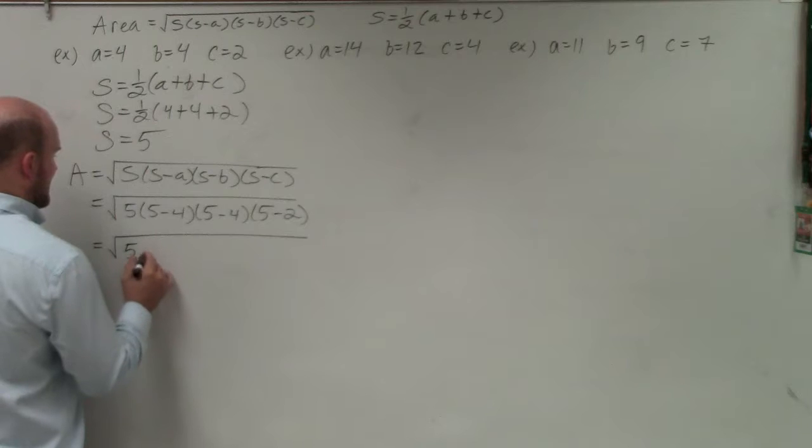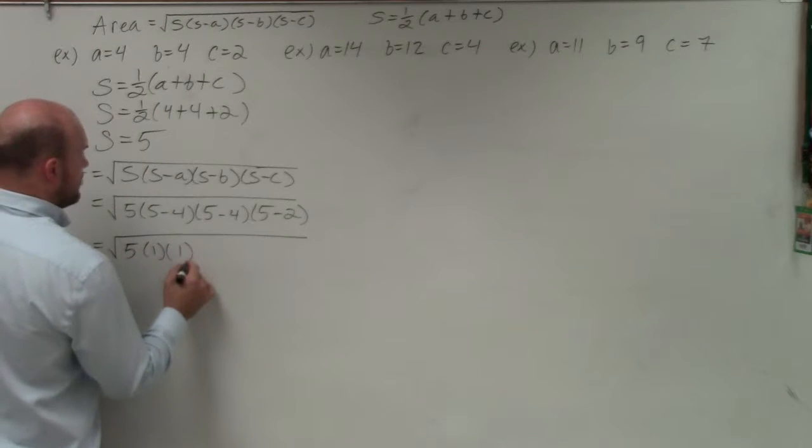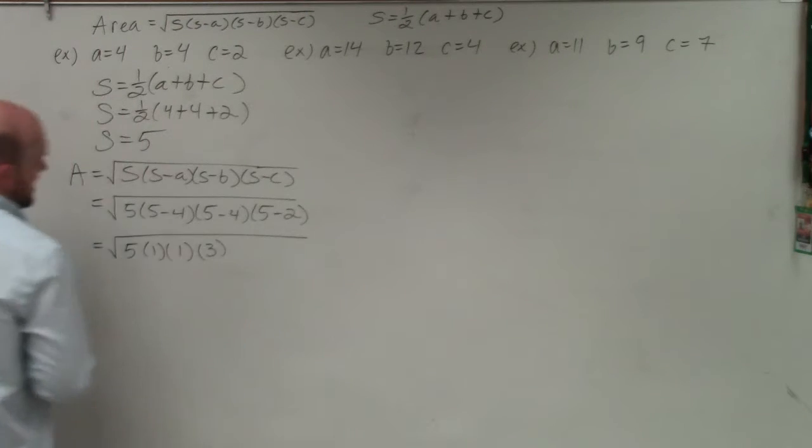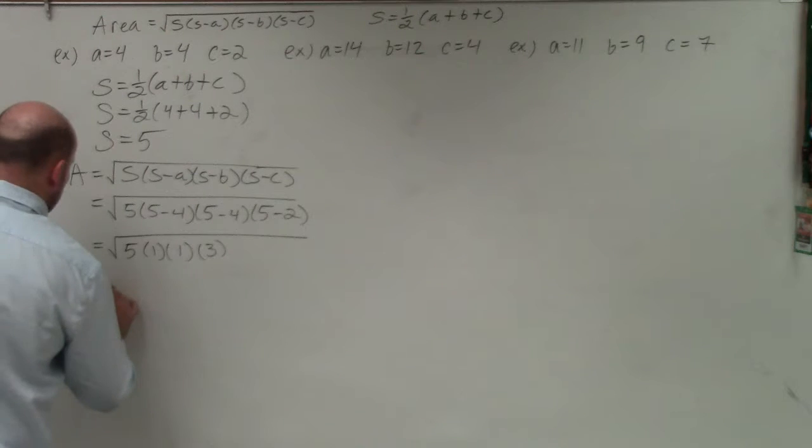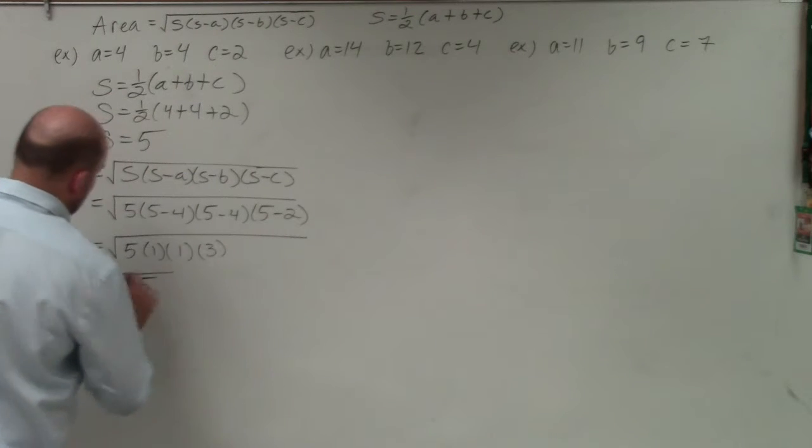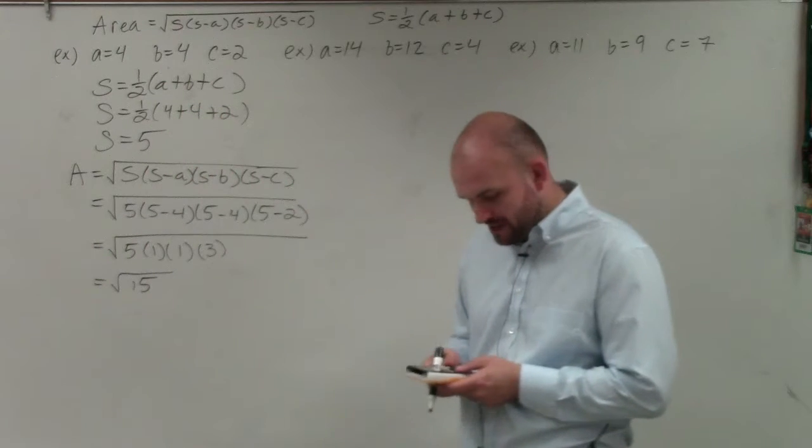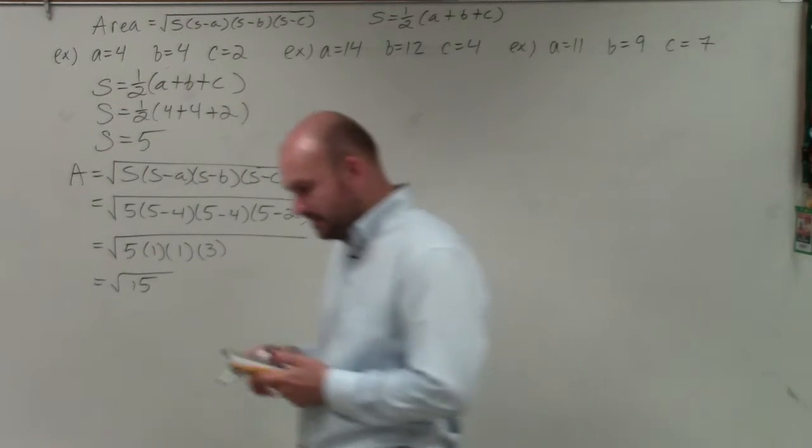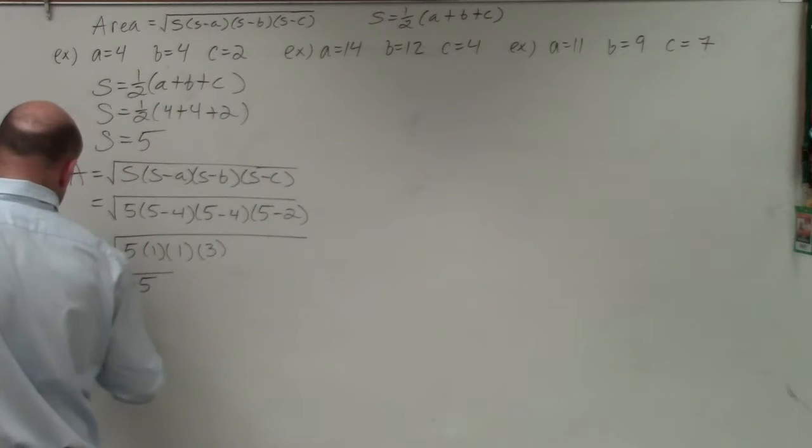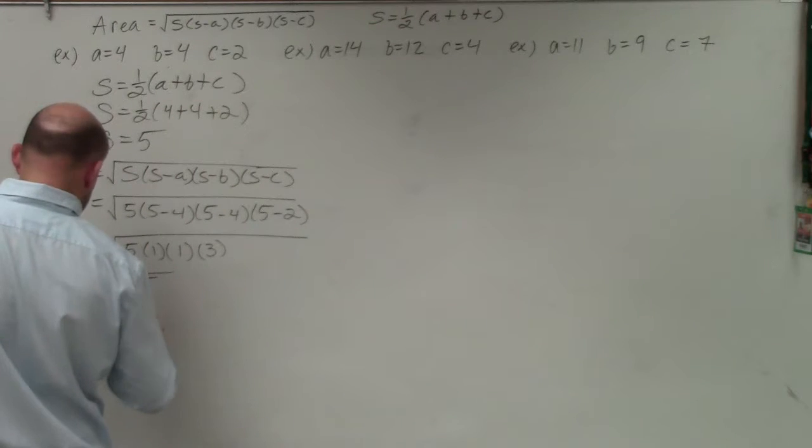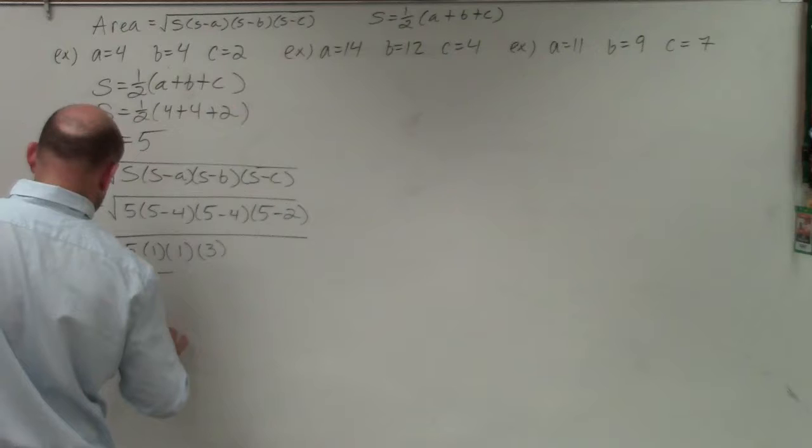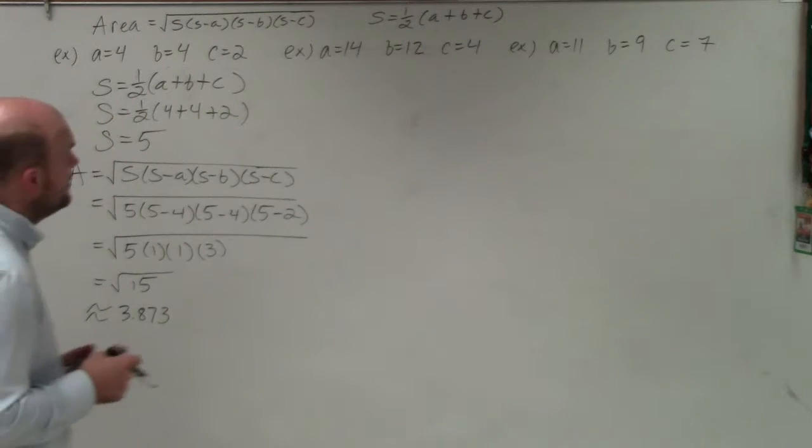So therefore, I have 5 times 1 times 1 times 3. And 5 times 1 times 1 times 3 equals the square root of 15. We can leave it as that. That's the way that I appreciate it. Or we could also approximate square root of 15. We could approximate to the nearest, let's say, 1,000th 3.873.